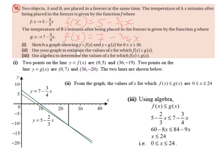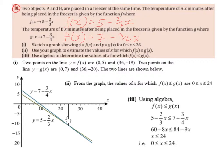Part 2: use your graph to estimate the values of x for which f of x is less than or equal to g of x. Using the graph, we find the point at which the two lines intersect, draw a vertical line up to the x-axis, and read off the x value. From the graph, the values of x for which f of x is less than or equal to g of x are x-values greater or equal to 0 and less than or equal to 24.